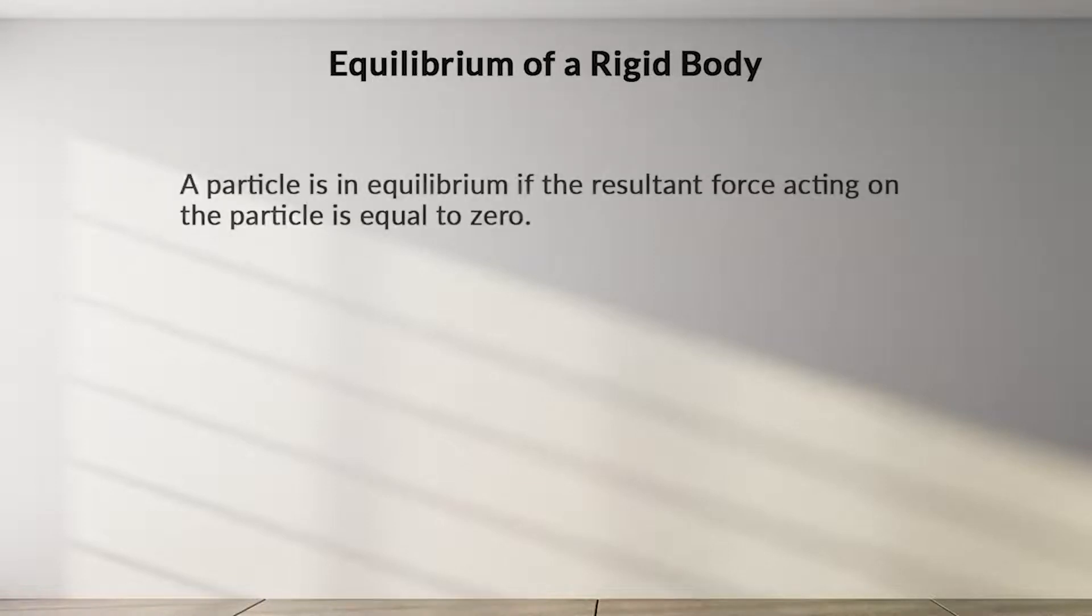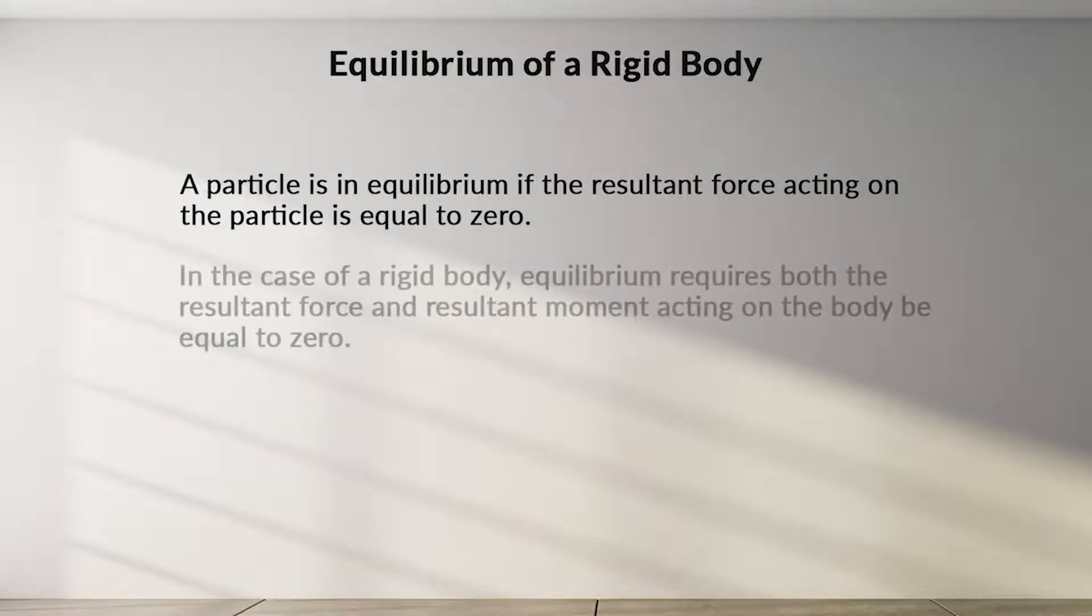A particle is considered in equilibrium if the resultant force acting on the particle is equal to zero. In the case of a rigid body, equilibrium requires both the resultant force and resultant moment acting on the body to be equal to zero.